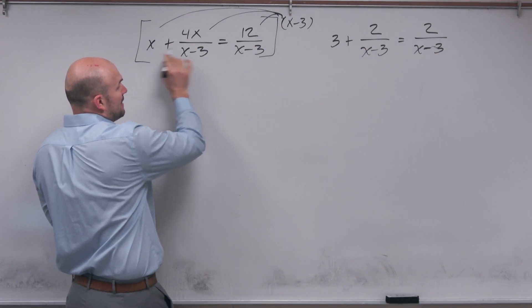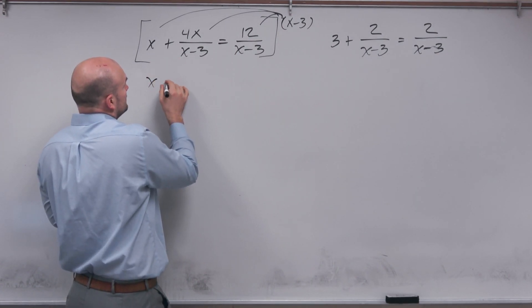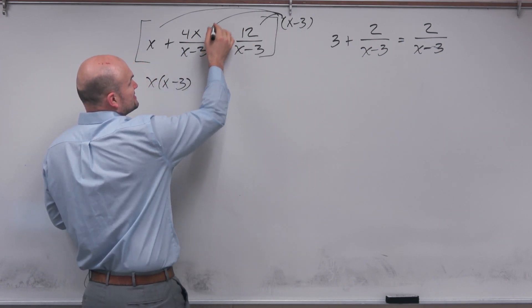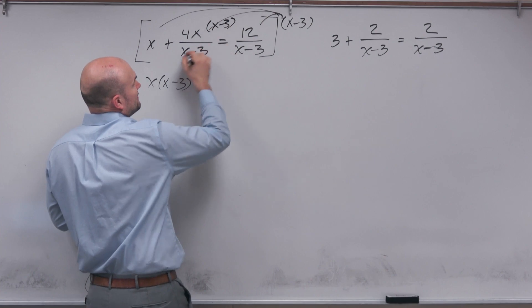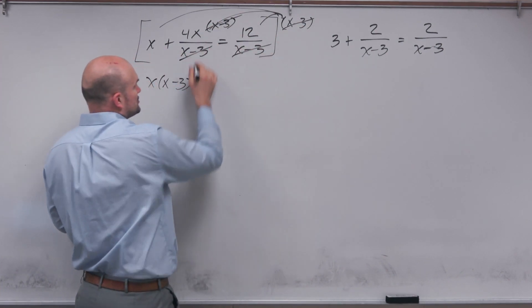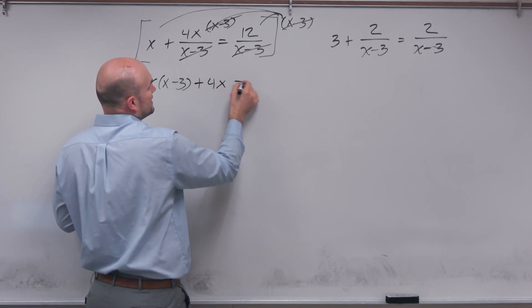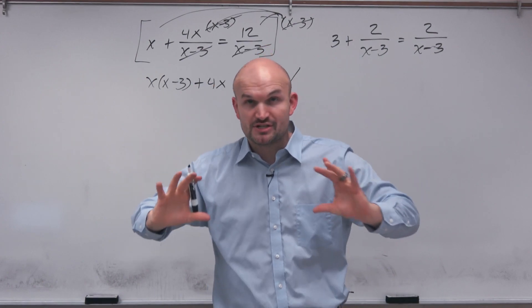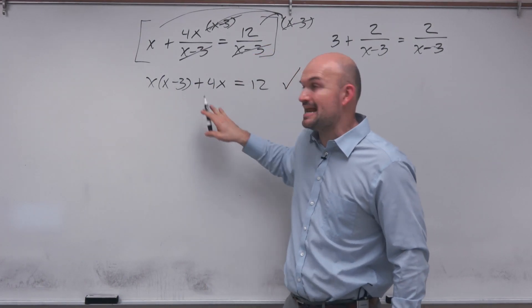Now by doing this what happens is I'm going to have an x times x minus 3. The x minus 3's though are going to divide out. Because technically you're going to have this, those will divide out and then over here that would divide out. So you're just going to be left with 4x is equal to 12. Now what's happened here is I have now just rewritten my rational equation as an equation with no variables in the denominator.